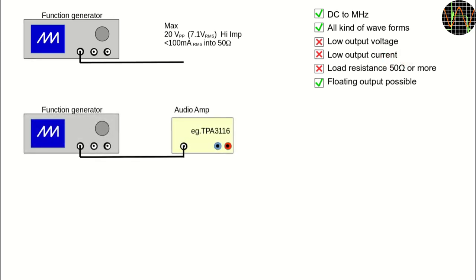But I find myself to often use my function generator as a programmable DC or AC source, wanting a higher output voltage or more current rather than higher frequencies or exotic waveforms. A relatively easy and inexpensive solution to this is to add an audio amplifier.